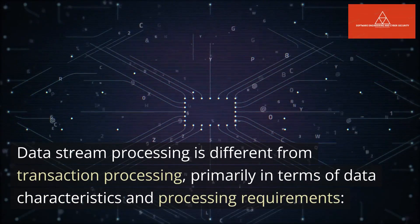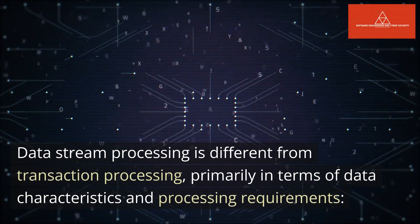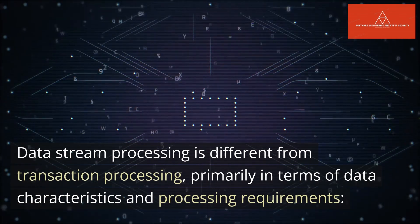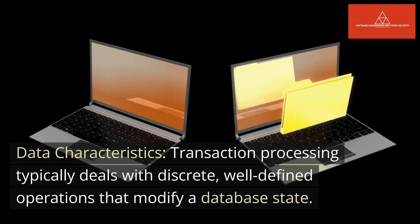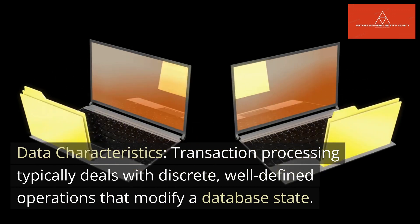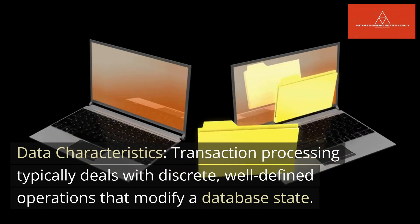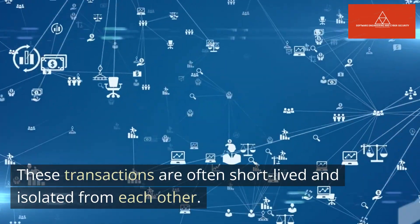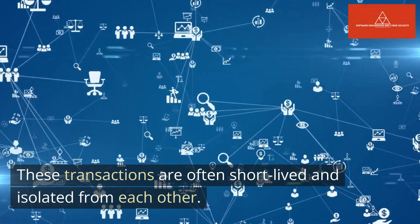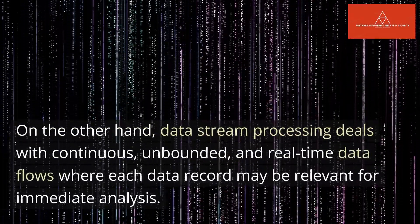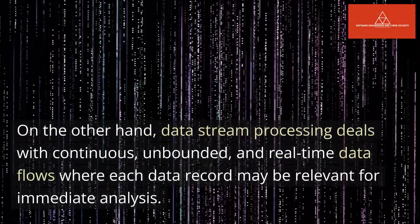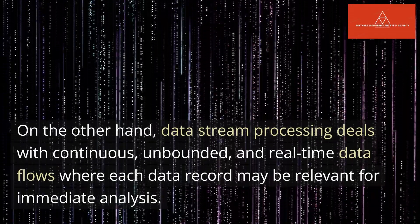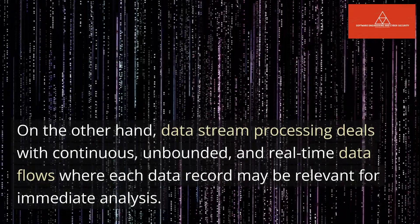Data stream processing is different from transaction processing primarily in terms of data characteristics and processing requirements. Data characteristics: transaction processing typically deals with discrete, well-defined operations that modify a database state. These transactions are often short-lived and isolated from each other. On the other hand, data stream processing deals with continuous, unbounded, and real-time data flows where each data record may be relevant for immediate analysis.